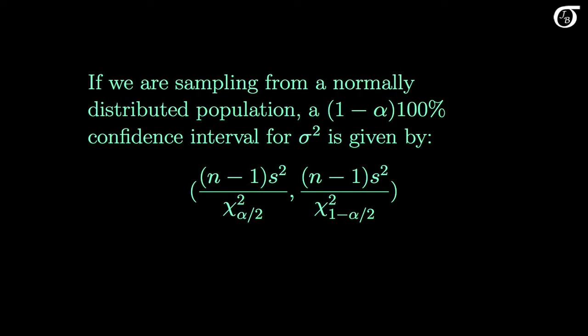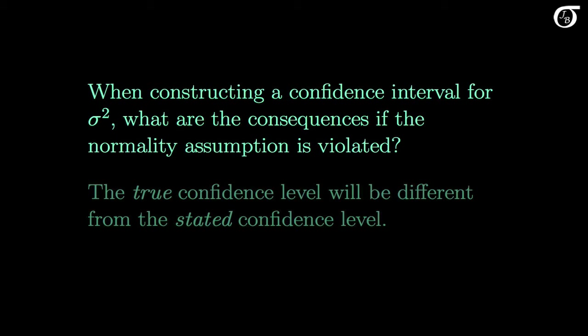Recall that if we are sampling from a normally distributed population, then a (1-alpha) times 100% confidence interval for sigma squared is given by this interval, which is based on the chi-square distribution. If we are in fact sampling from a normally distributed population, then this method works perfectly — the true confidence level of the interval will be exactly equal to the stated confidence level. The question we're going to look at is: what are the consequences if we use this procedure when the normality assumption is violated? The true confidence level will be different from the stated confidence level; our stated confidence level may be very different from reality.